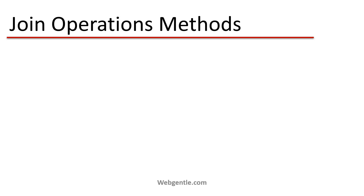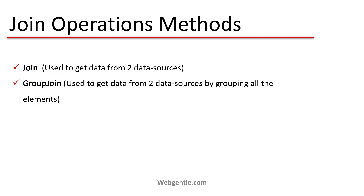Now let's see what different methods are available for join operations. Join operations have different types, which we will learn in the next videos. The first method is Join — with the Join method you can get data from two or more data sources. Then we have one more method, Group Join, which is used to get data from two data sources by grouping all the elements. In the next videos we will learn both methods with different scenarios in detail.